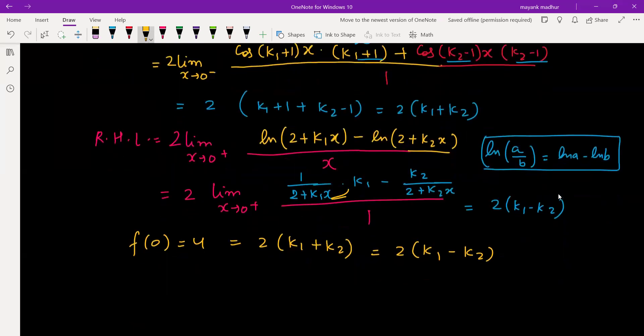So from here we are getting k₁+k₂ = 2 and k₁-k₂ = 4. This linear equation in 2 variables which you are solving from childhood. So let's find k₁ and k₂. k₁ is 3, k₂ is -1.